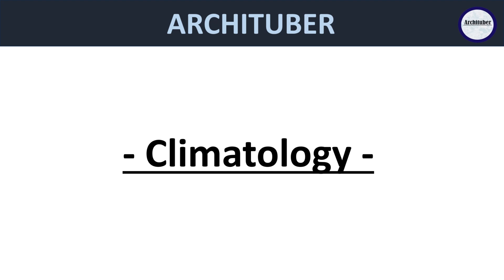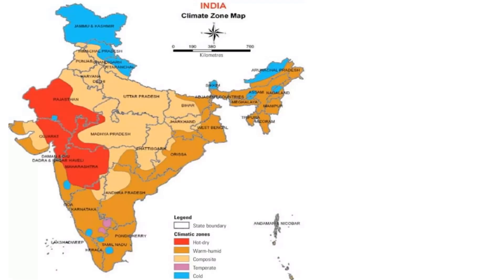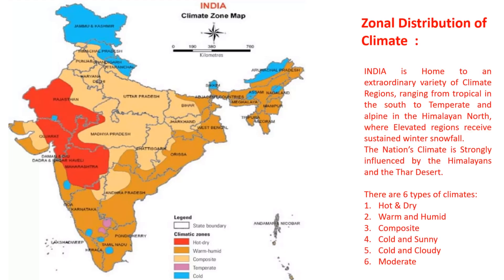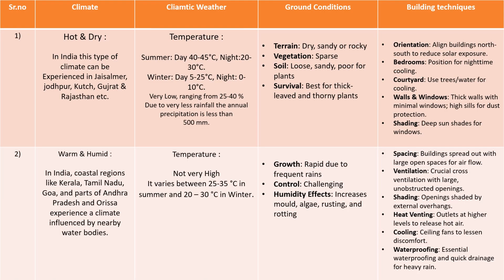Starting off with the first topic: climate zones for revision. We have this climatic zone map for India — we have six climatic zones: hot and dry, warm and humid, composite, cold and sunny, cold and cloudy, and moderate. We have discussed all of them in detail, but for your revision I have made a table chart so it can be easier to revise.